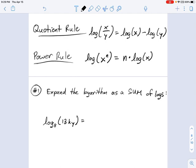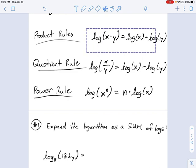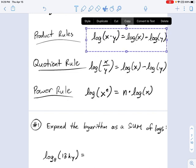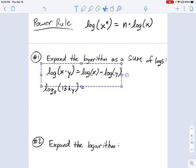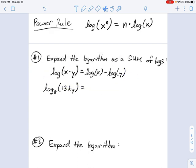For this first example, number one, it says expand the logarithm as a sum of logs, and I have log base 8 of 13ky. Let's use this product rule property: log(x*y) = log(x) + log(y). Keep in mind, this doesn't necessarily refer to the variables x and y, it just means anything multiplied together. So let's think about what's being multiplied together. Well, I've got 13 times k times y. So each of these things that's getting multiplied together becomes the argument of a new logarithm.